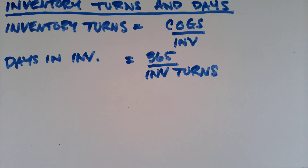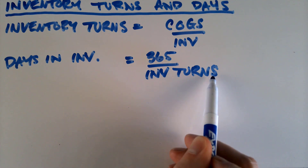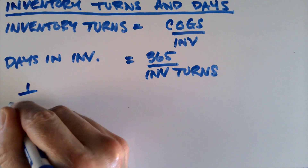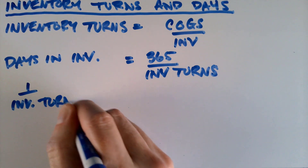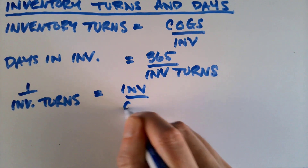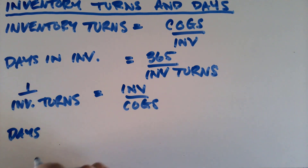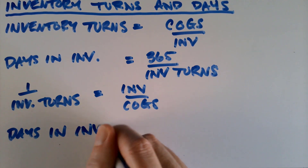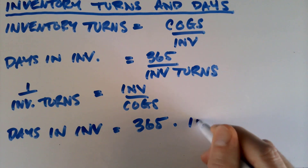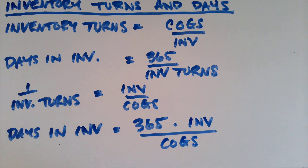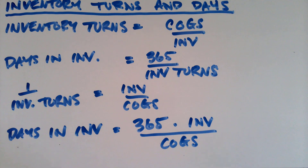Now, what could we do to put these two equations together? If we are dividing by inventory turns, that is the same as multiplying by the inverse of inventory turns. The inverse of inventory turns is just inventory over COGS. So I can redo the calculation and say that days in inventory equals 365 times inventory divided by cost of goods sold. This is important because many times in questions we'll be given two of these values and asked to find the third — and with them all in one formula, we can solve for any variable.